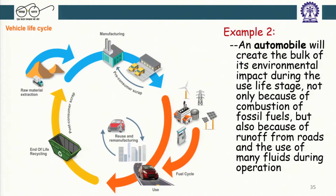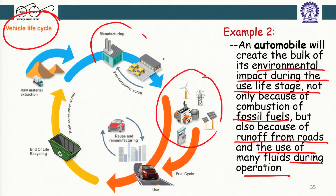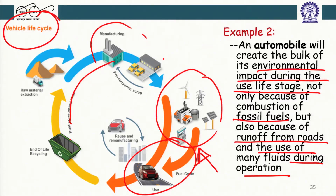For automobiles, the bulk of environmental impact occurs during the vehicle's life stage — not only because of combustion of fossil fuel, but also because of runoff from roads and the use of many fluids during operation. So while aluminum's biggest environmental footprint is in production, for automobiles it is during the operational phase. The focus during the use phase includes fuel cycle, energy sources, stormwater runoff, and end-of-life scrap.